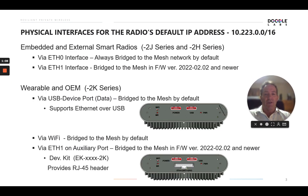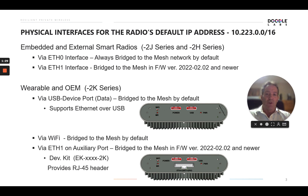Now let's talk about the physical interfaces for the various radio form factors. For the embedded and external smart radios — that's the 2J series or the legacy 2H series products — you'd log in via the Ethernet zero interface, as this is always bridged to the mesh network by default. The secondary option would be the Ethernet one interface, but it's not always bridged to the mesh by default. Only on newer versions of firmware, February 2022 or newer, is it bridged by default.